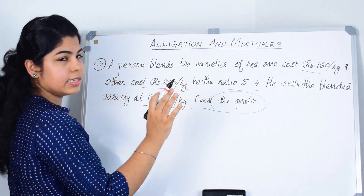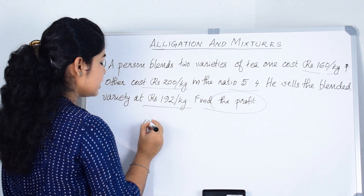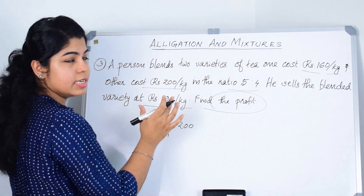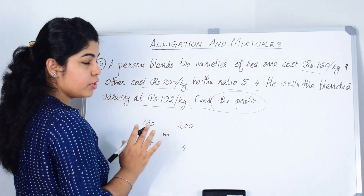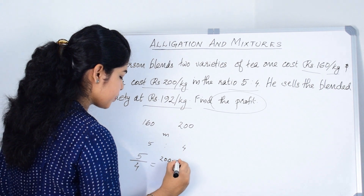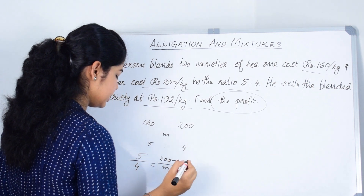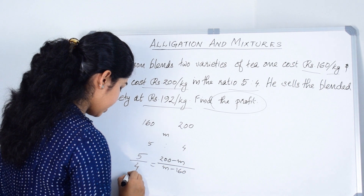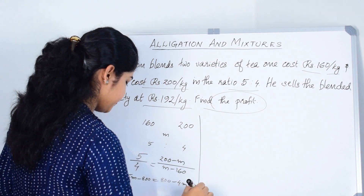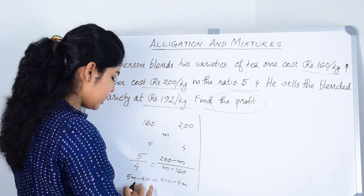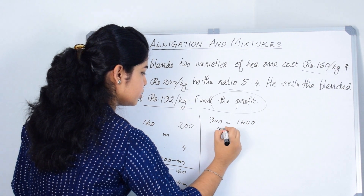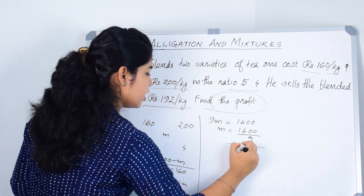First let us write the details: cheaper price is 160 and dearer price is 200. The mean value is not given, so we find M using rule of allegation. 5 by 4 equals 200 minus M divided by M minus 160. Cross multiplying gives 5M minus 800 equals 800 minus 4M. Taking terms to their respective sides: 9M equals 1600. Therefore M equals 1600 by 9.